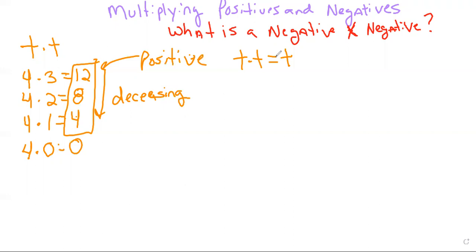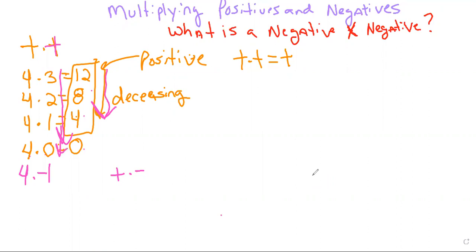But let's continue the pattern — this is going to be the really important part. Let's keep with the fours. I'm going to do four times negative one. Notice what has happened: we've gone from having a positive number and worked our way down to negative numbers. We've decreased by four every single time, so if we keep following that pattern, four times negative one is negative four.